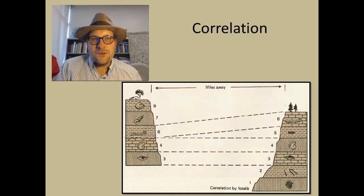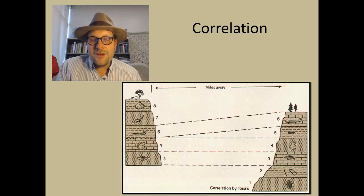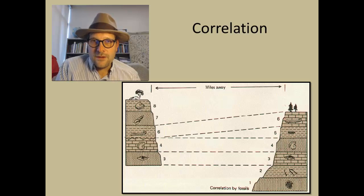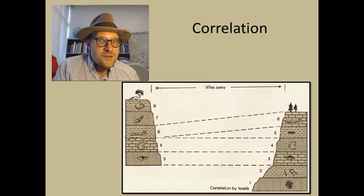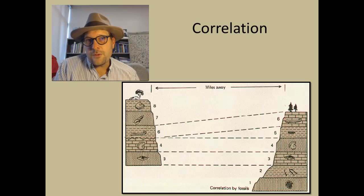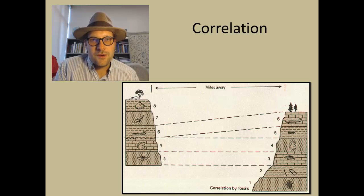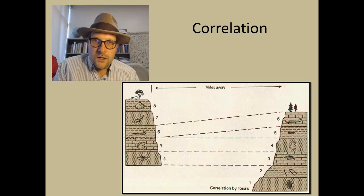Early geologists were able to map out many of the layers seen in England and correlate them based on the sequence of fossils in the fossil record. This was done in the early 1820s and became instrumental in the Industrial Revolution, as it gave us the ability to predict where we might find valuable natural resources like coal, used in establishing early steam locomotion. Correlation is a very important principle in geology with very important predictive powers.